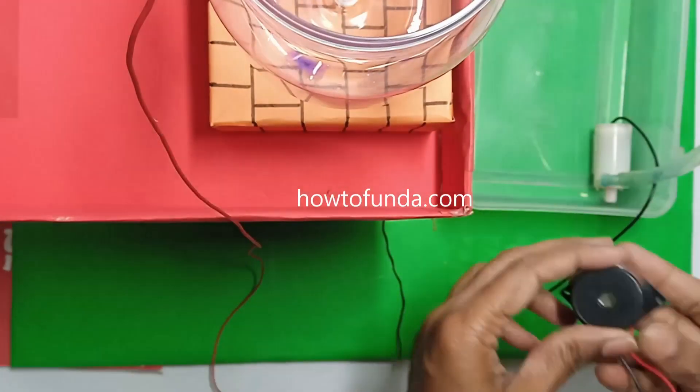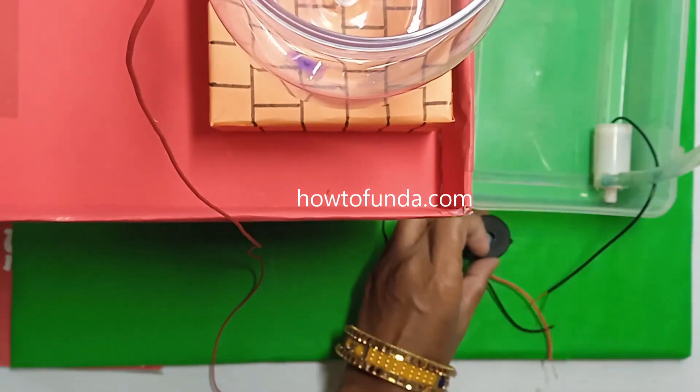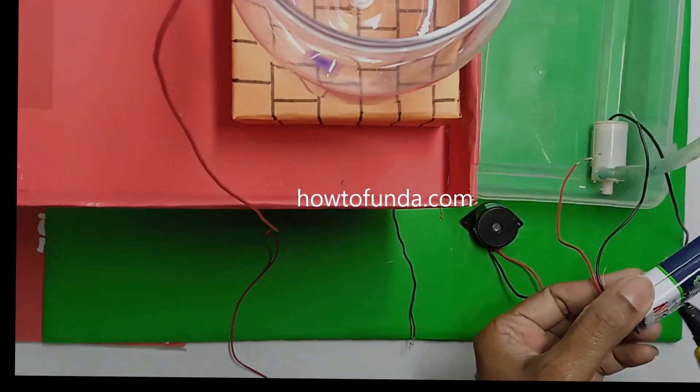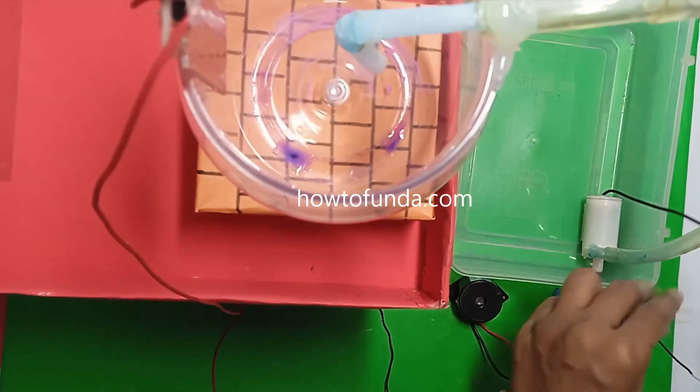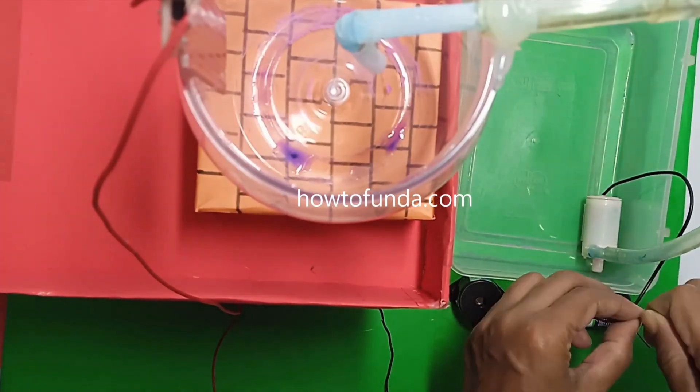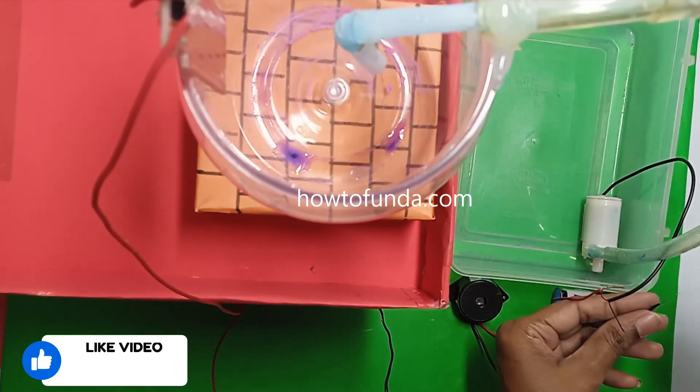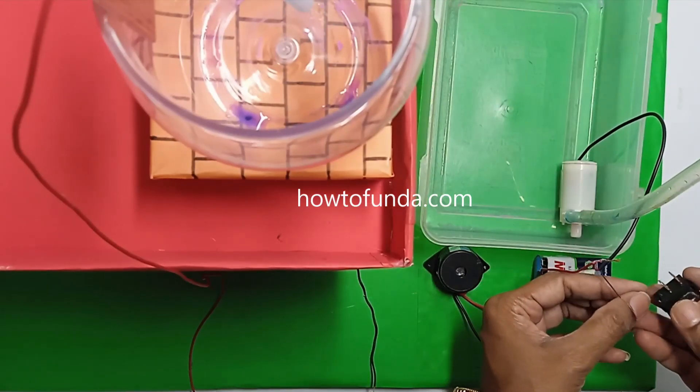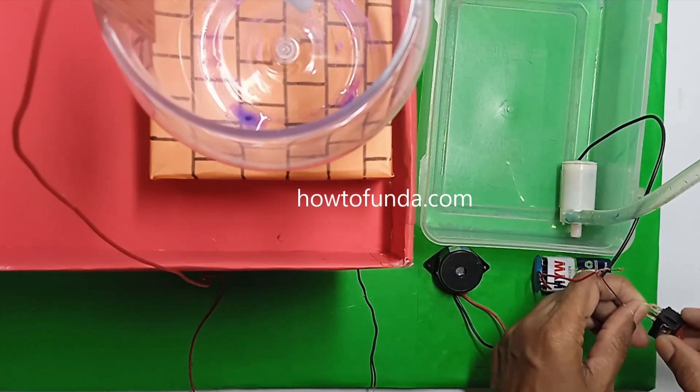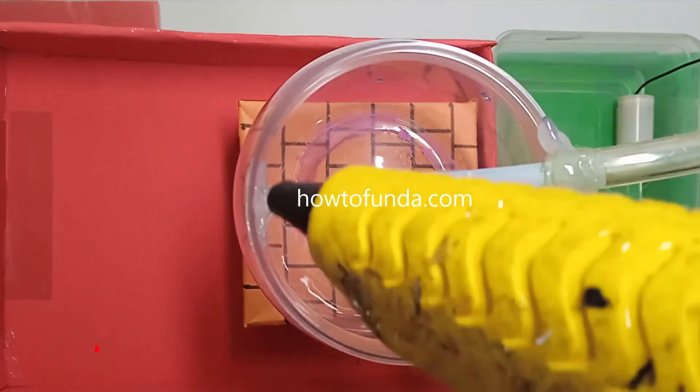We also use a DC water pump to lift the water from the basement or the sump to the overhead tank which we kept on the top of the house. On the top of the house, in the water tank, we have kept a water sensor.